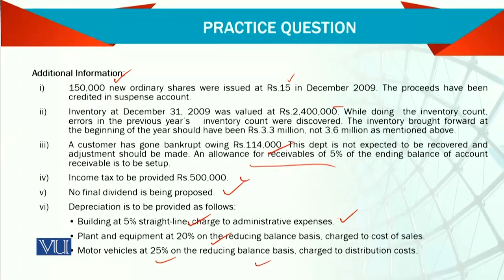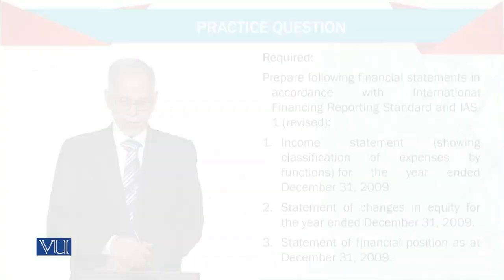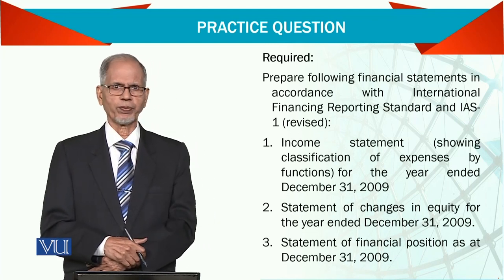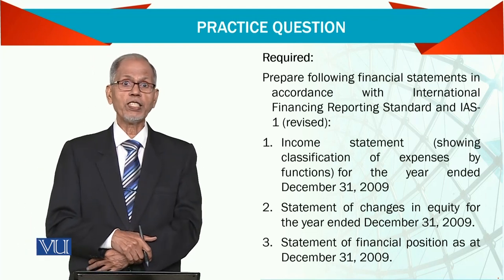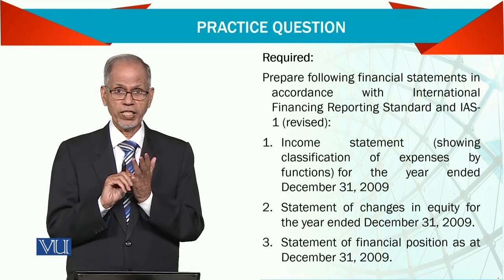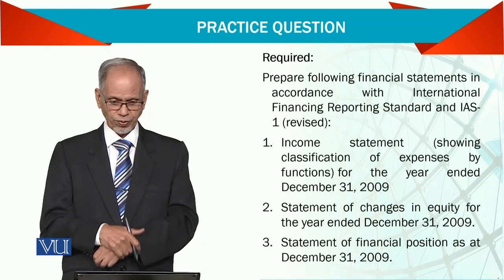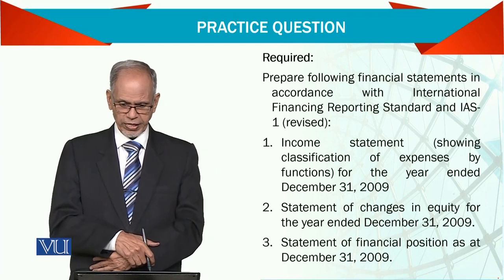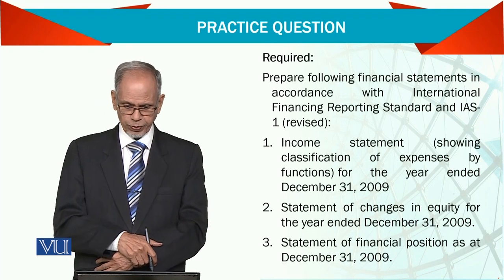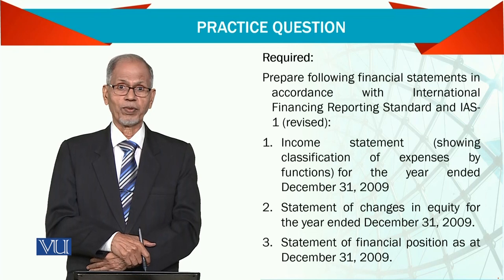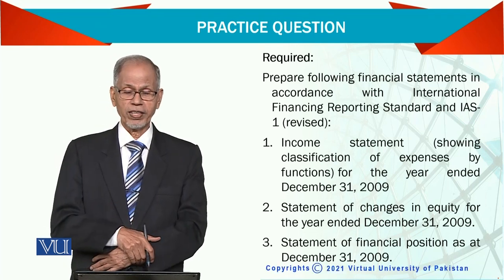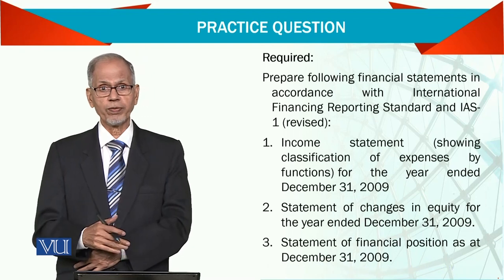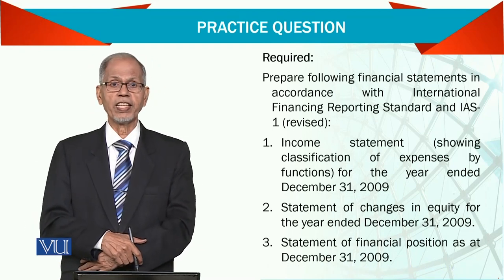The requirement is to prepare the following statements: an income statement showing classification of expenses by function — administrative, selling, and distribution are clearly mentioned and a detail schedule should be provided. Then the statement of change in equity for the year ending December 31st, 2009, and the statement of financial position as on December 31st, 2009. These are the three main statements required. The cash flow statement is not required here; that is covered under IAS 7, which we will discuss next, inshallah.